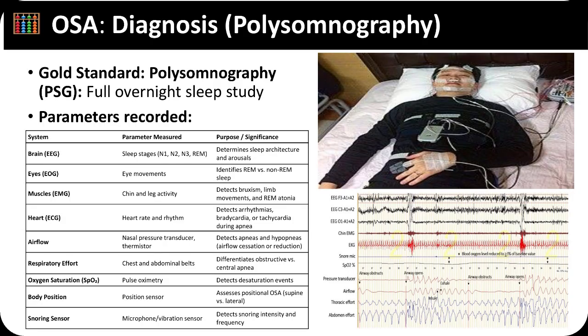The gold standard for diagnosing obstructive sleep apnea is an overnight polysomnography, which comprehensively evaluates sleep architecture and breathing disturbances. This study records multiple physiological parameters, including brain activity through EEG to identify sleep stages, eye movements via EOG to distinguish REM from non-REM sleep, and muscle tone through EMG to detect limb activity or bruxism. Heart rate and rhythm are assessed by ECG, while nasal airflow sensors and respiratory effort belts differentiate obstructive from central apnea. Pulse oximetry monitors oxygen desaturation events, and position and snoring sensors identify positional apnea and snoring frequency.